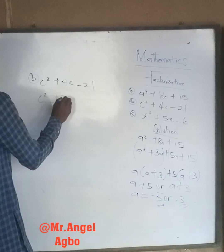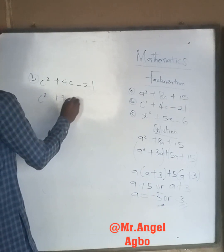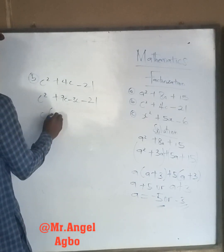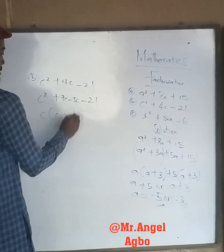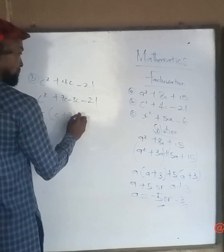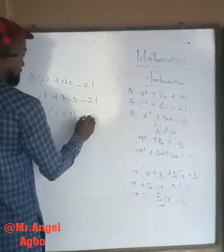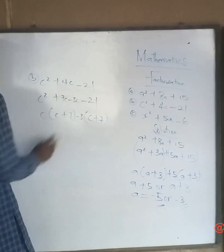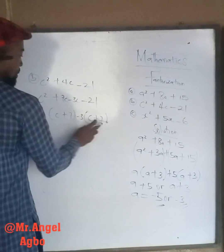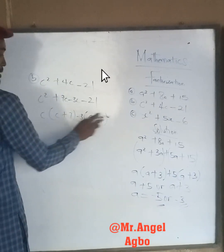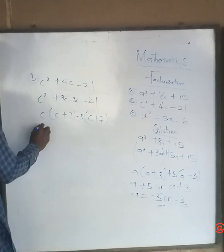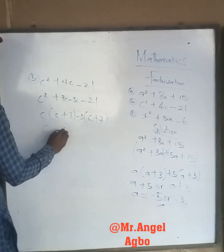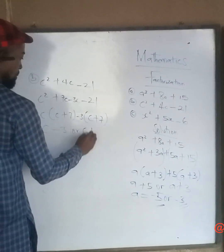So, c squared plus 7c minus 3c minus 21. I can say c, bracket, c plus 7, bracket, minus 3, bracket, c plus 7, bracket. And negative 3 times positive 7 will give you negative 21.